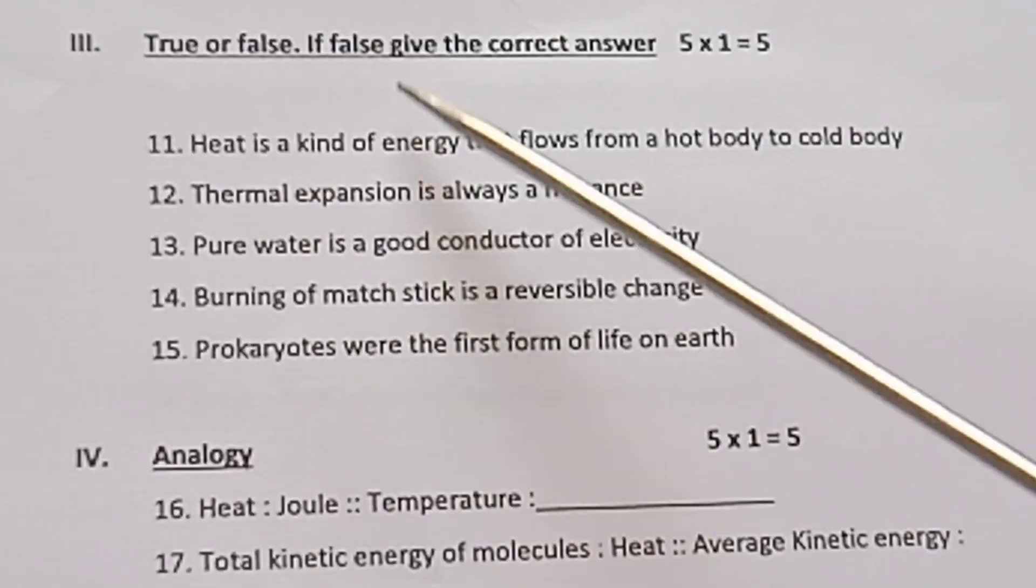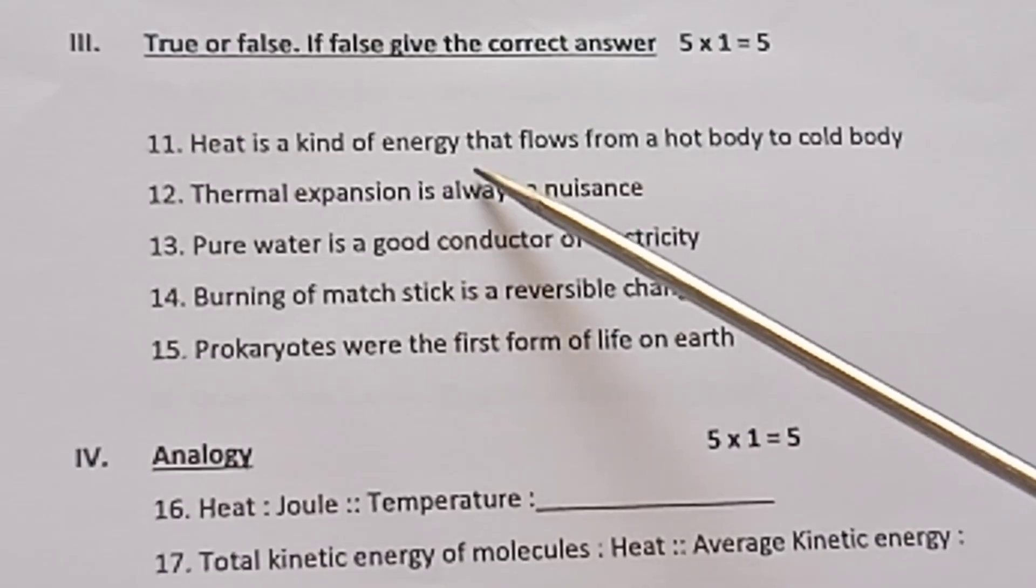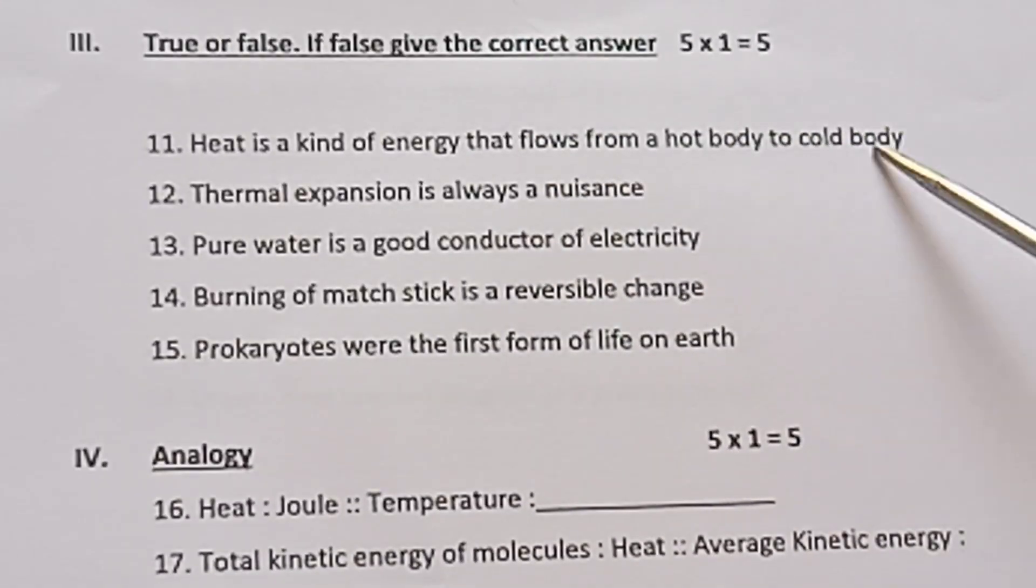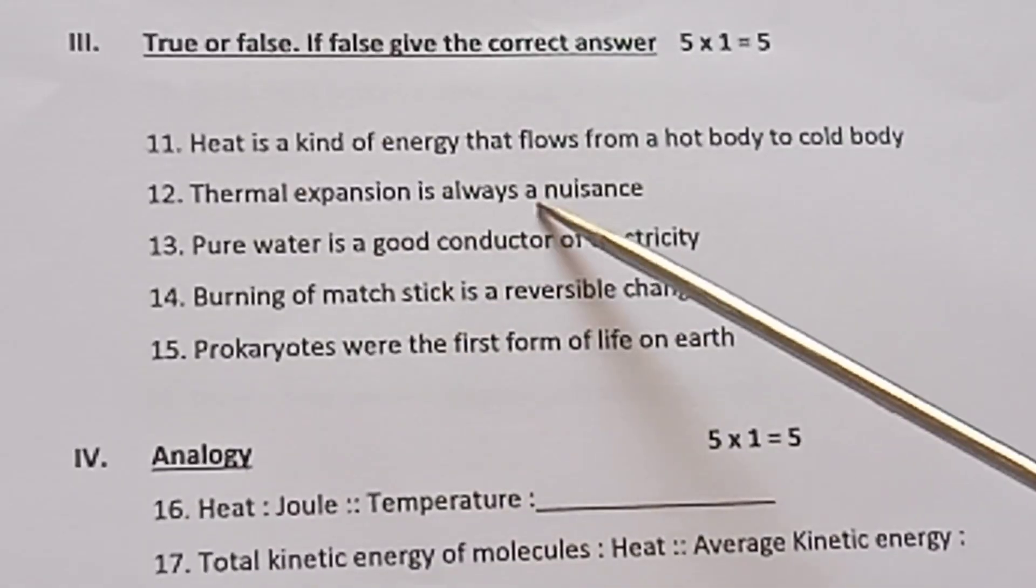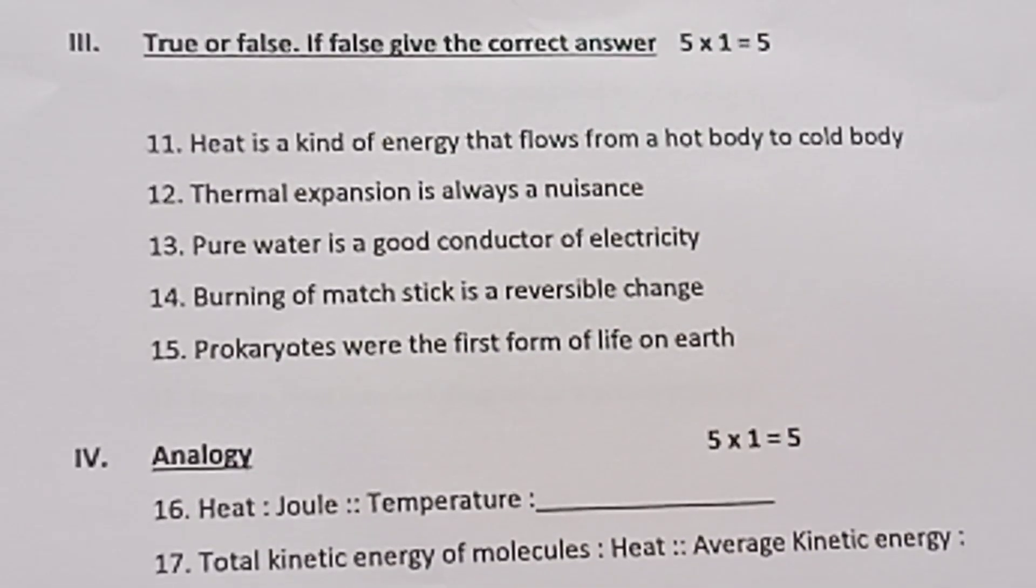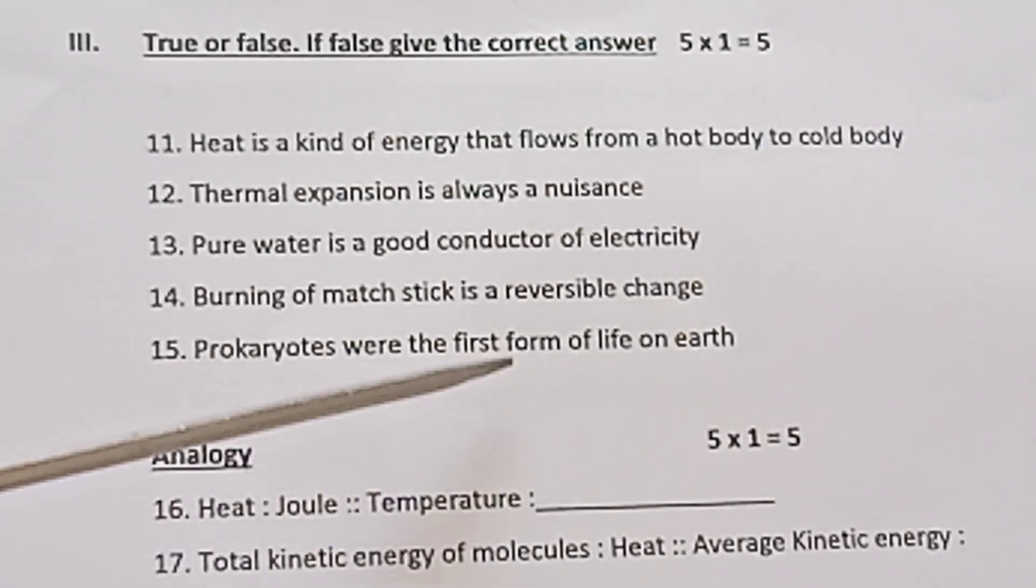Section III: True or False. If false, give the correct answer. 5 × 1 = 5. Question 11: Heat is a kind of energy that flows from a hot body to a cold body. Question 12: Thermal expansion is always a nuisance. Question 13: Pure water is a good conductor of electricity. Question 14: Burning of a matchstick is a reversible change. Question 15: Prokaryotes were the first form of life on earth.